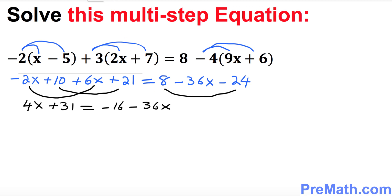The next step is to solve for X, meaning we're going to move all X's to the left hand side and the constants to the right hand side. We're going to subtract 31 from both sides.